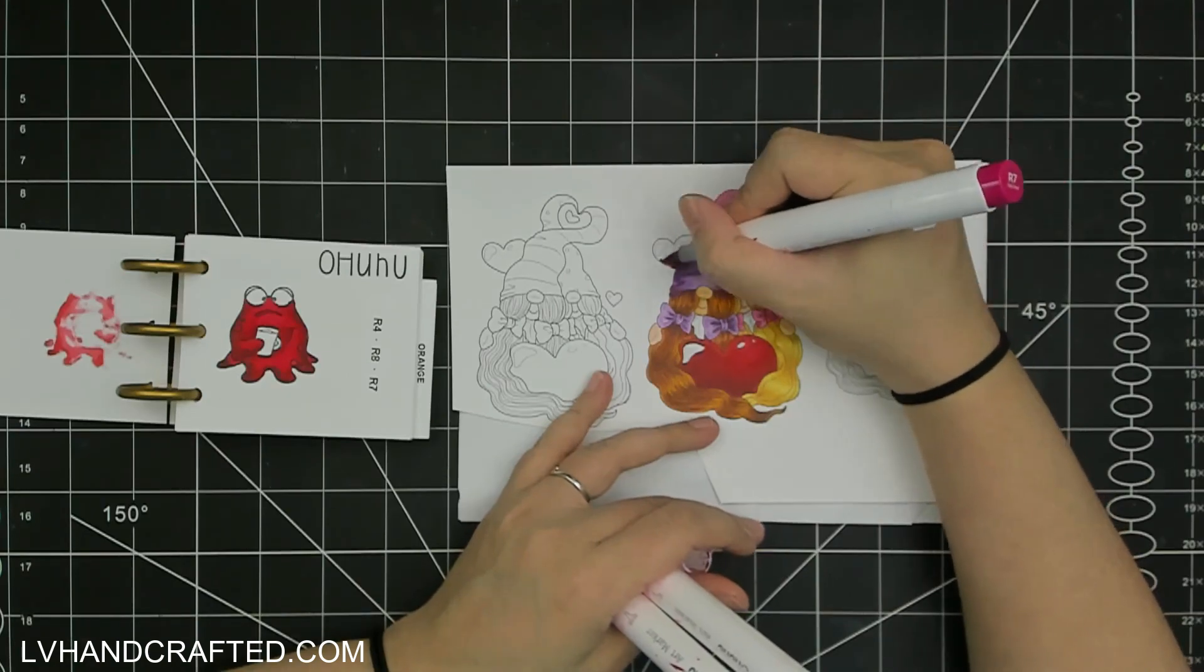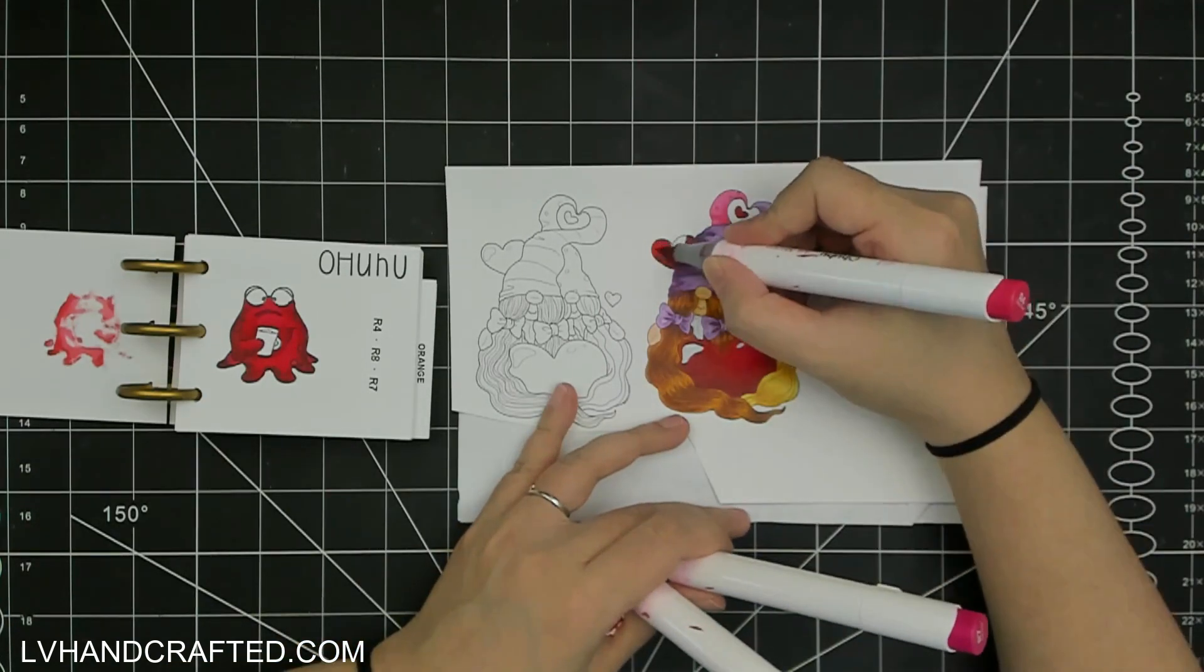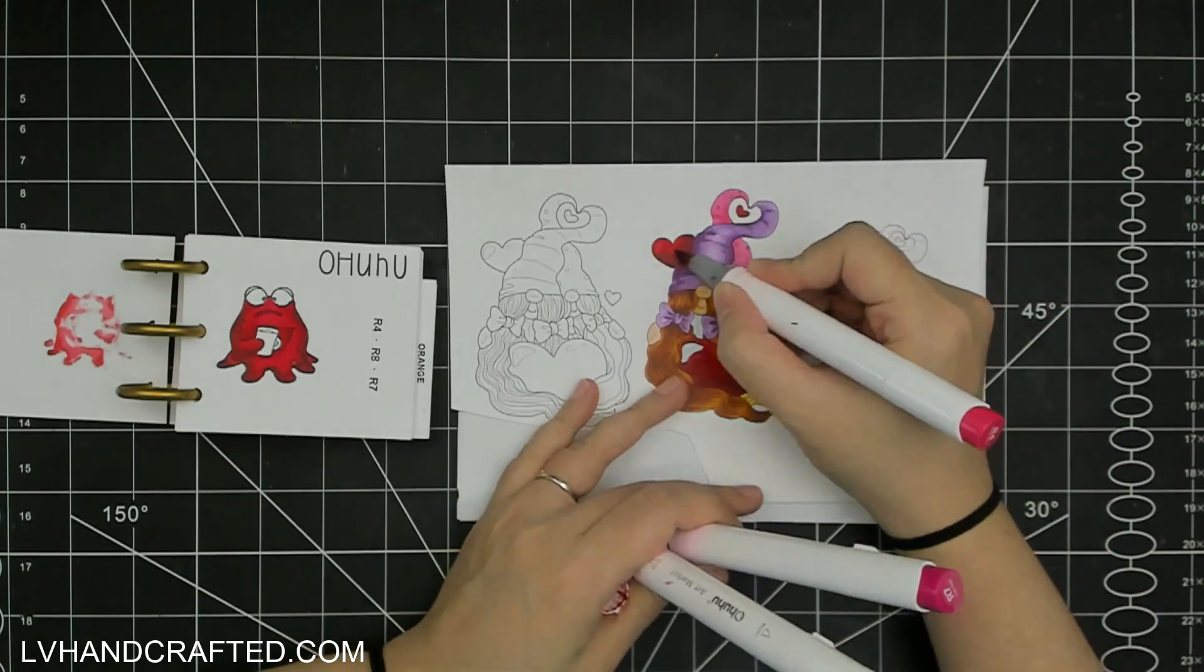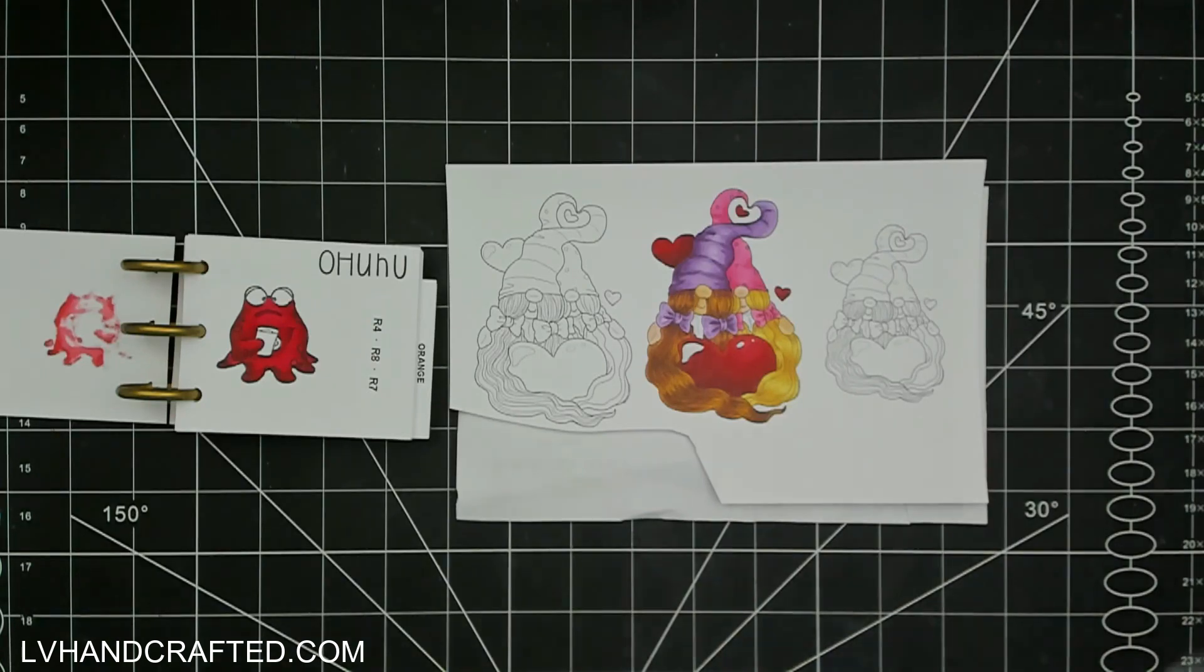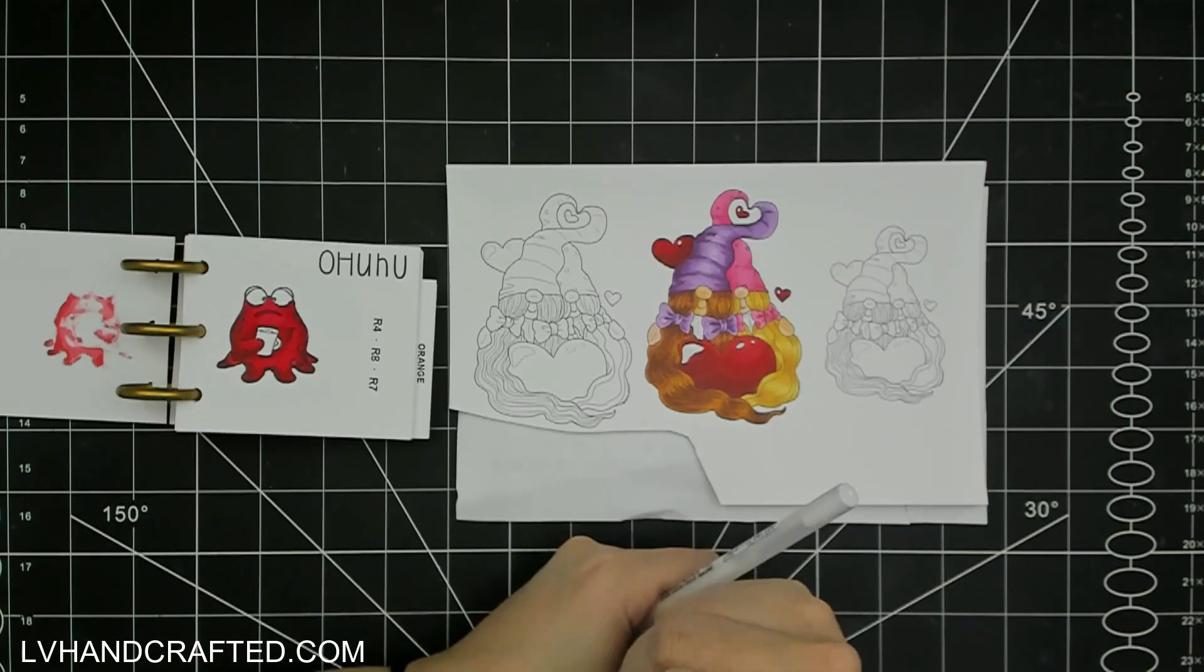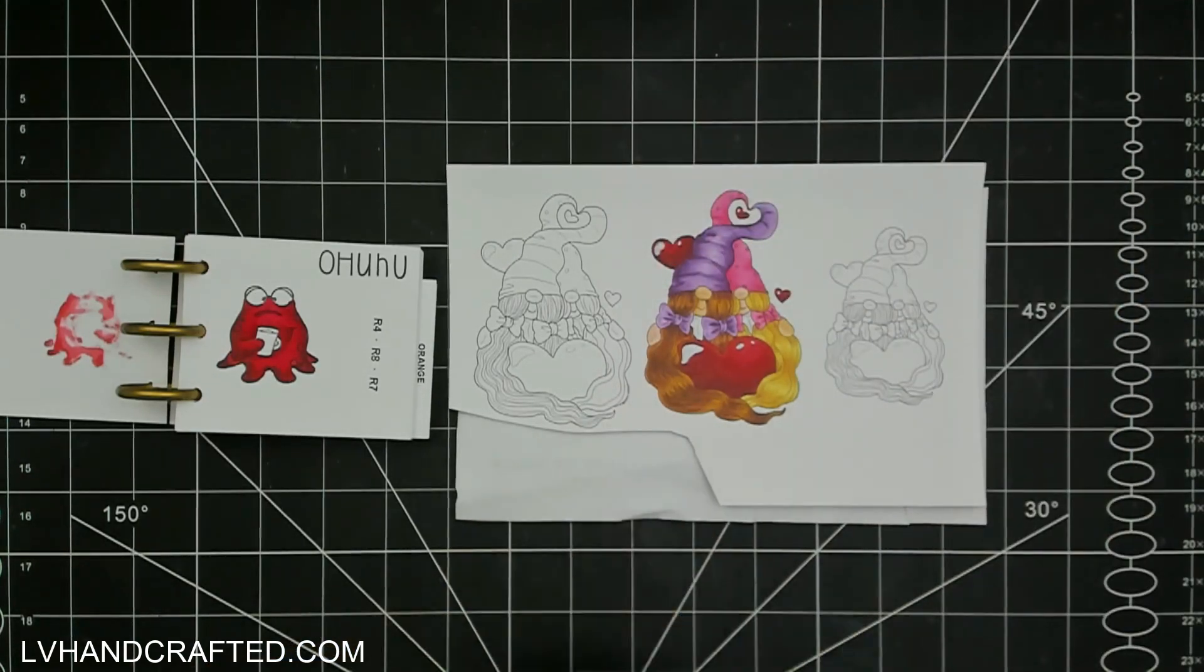I would definitely start on the lighter end because you can always add more, you can always darken more easily. We're almost done with the coloring here. It goes really fast. I am speeding it up quite a bit, but I do feel like coloring with markers is for me faster than coloring with color pencils.